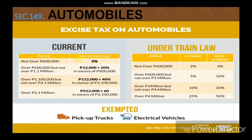Under the TRAIN Law, the automobile excise tax rates are as follows: if the price is not over 600,000 pesos, the hybrid rate is 2% while the non-hybrid rate is 4%. If the price is over 600,000 pesos but not more than 1 million, the hybrid rate is 5% and non-hybrid is 10%. If over 1 million but not over 4 million, hybrid is 10% and non-hybrid is 20%. Over 4 million, the non-hybrid rate is 50%.